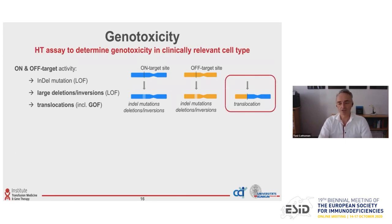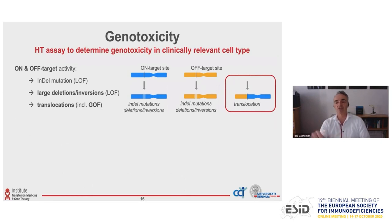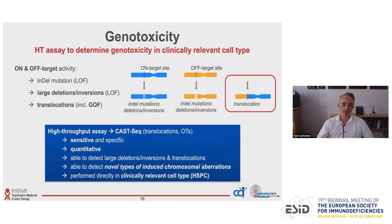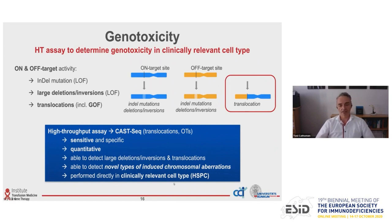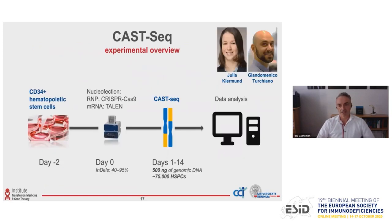What we wanted to do is develop a novel assay that not only looks at off-target activity, but also at the consequences — being translocations. We designed an assay we called CAST-seq, which captures translocations in an unbiased manner. It should be sensitive, quantitative, and able to detect all types of induced chromosomal aberrations. Most importantly, it should be performed directly in the cell type that you transfer to the patient.